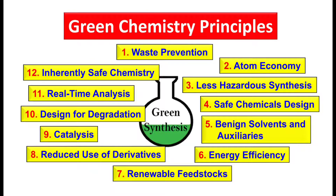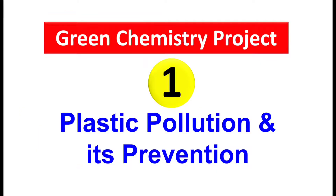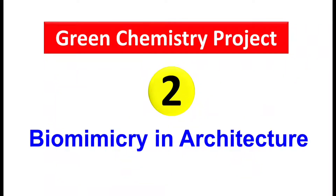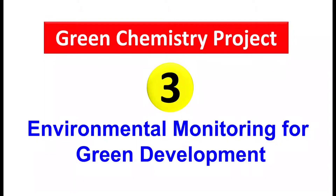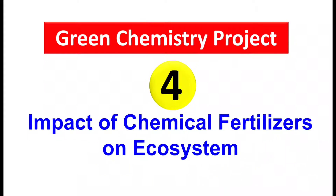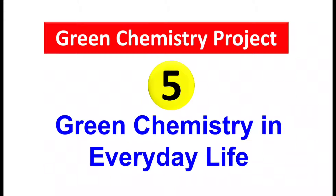So in this lecture, by using these twelve principles, I am giving different topics on green chemistry projects. Let's start the discussion. First project topic is plastic pollution and its prevention. Second, biomimicry in architecture. Third, environmental monitoring for green development. Fourth, impact of chemical fertilizers on ecosystem. Next, green chemistry in everyday life.